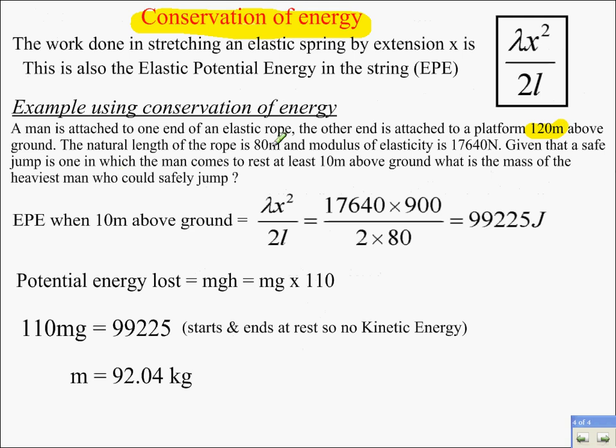Natural length for the rope is 80 meters and lambda is 17,640. So we need him to come to rest at least 10 meters above the ground or it could be quite painful. OK, the mass of the heaviest man who could safely jump.